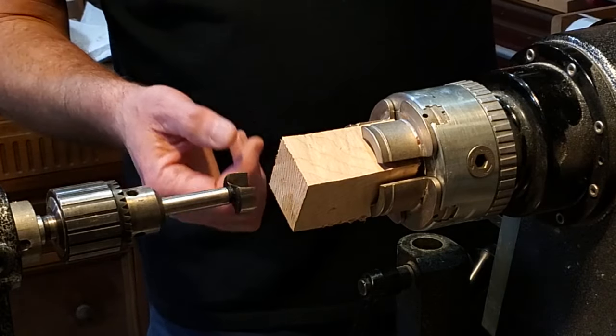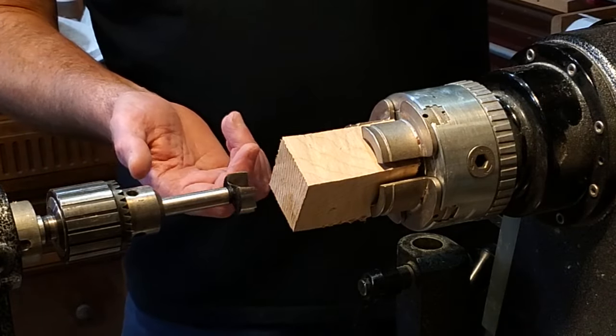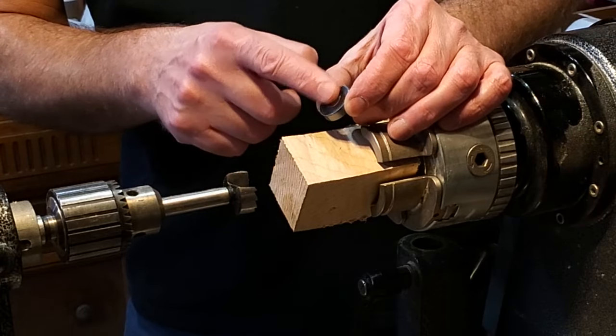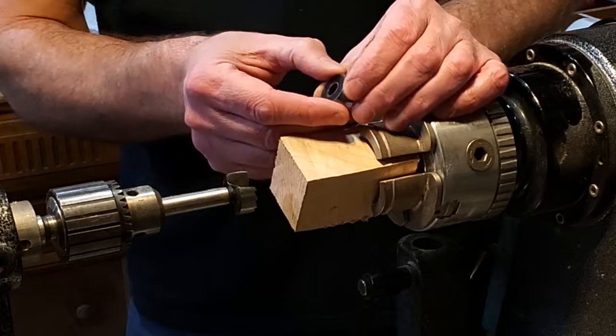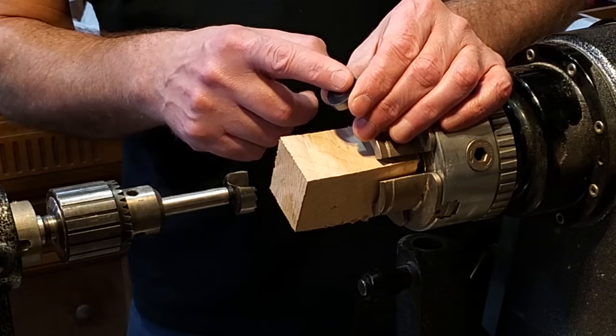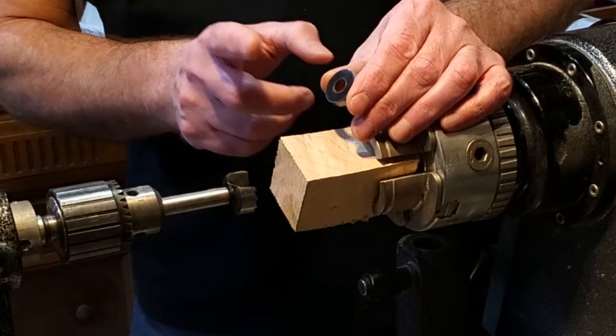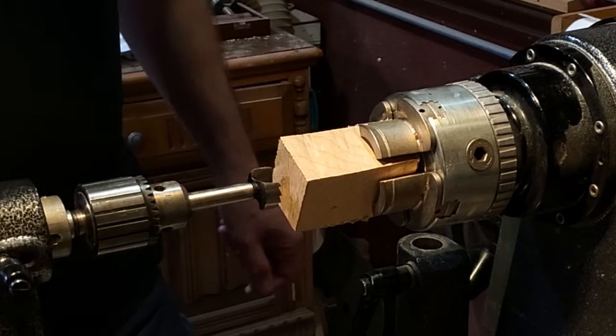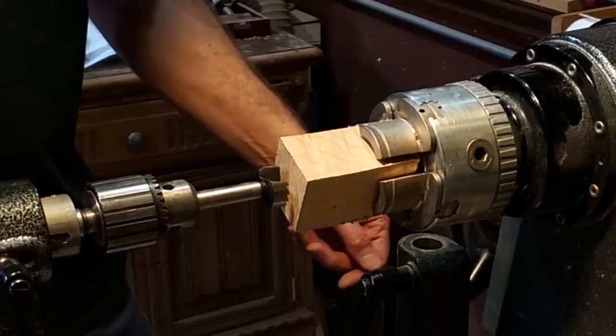He uses a forstner bit a little bit bigger size than whatever he's doing. I'm going to do a larger size for a bottle opener on this one just to show you, but you can use whatever size you want, whether you're doing a stopper, pizza handle, or a bottle opener. Use the forstner bit first. Get it all centered up here.